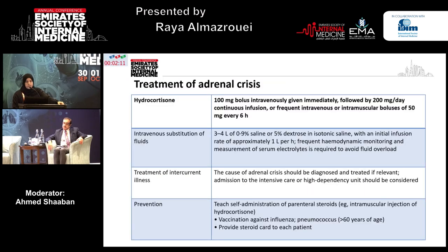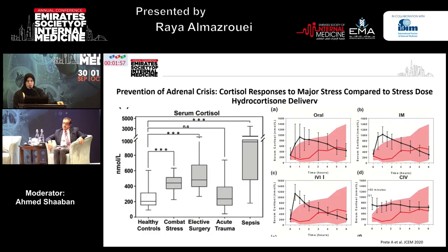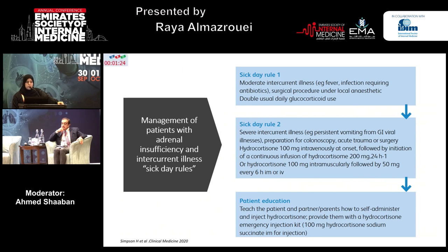For adrenal crisis management briefly: replace with hydrocortisone 100 mg bolus followed by infusion, or give intravenous or intramuscular 50 mg every six hours, with fluid replacement and treatment of the underlying causative factor. The reason we favor continuous intravenous infusion is that a well-designed study measuring cortisol in healthy volunteers under stressful conditions found a mean cortisol level of around 800 nmol/L, and continuous infusion was associated with constant achievement of that same level. Remember to teach patients about sick day rules — doubling or tripling doses in moderate intercurrent illness, and using parenteral hydrocortisone in severe cases. They can administer it subcutaneously, and there are videos available on YouTube to share with patients.